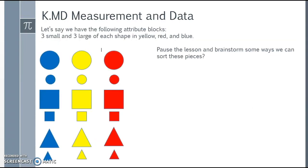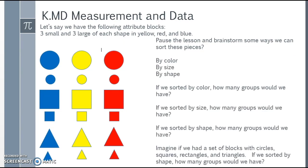Let's say we have the following attribute blocks: three small, three large of each shape in yellow, red, and blue. Pause the lesson and brainstorm some ways we can sort these pieces. We could sort them by color, by size, or by shape. Sorted by color, we have three groups: blue, yellow, red. Sorted by size, we have two groups: big ones and little ones.